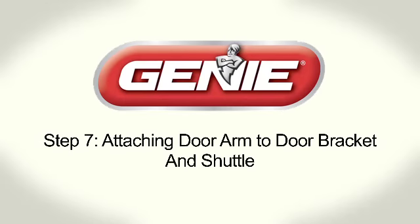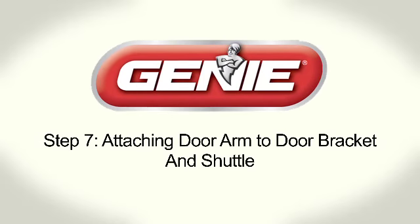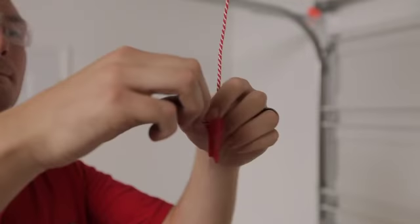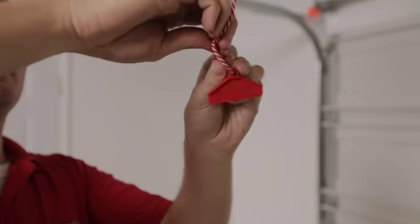Step 7: Attaching Door Arm to Door Bracket and Shuttle. Secure the Emergency Release Handle to the Cord.